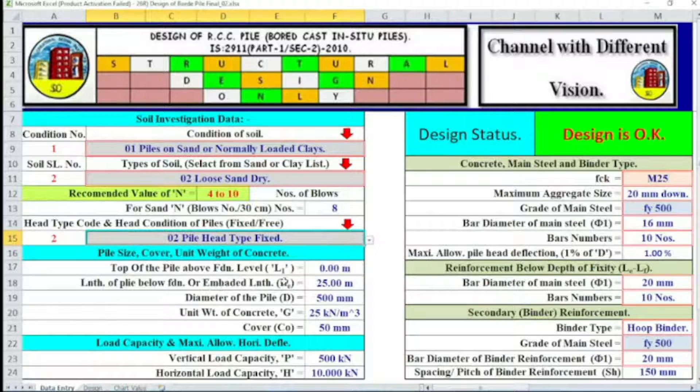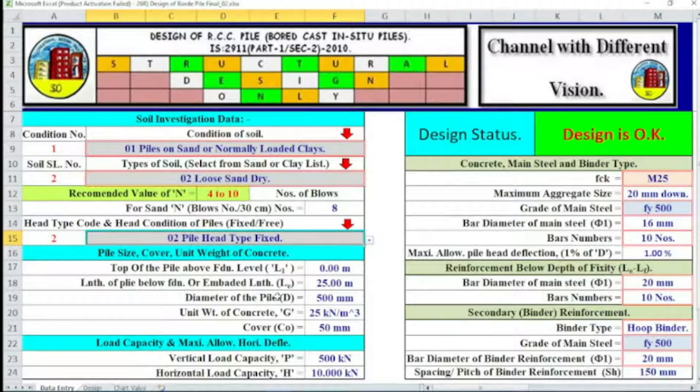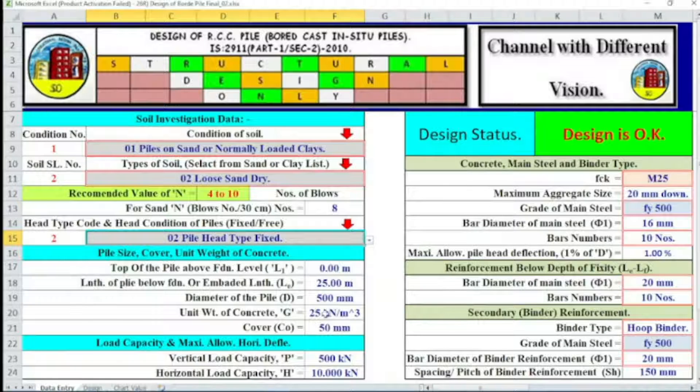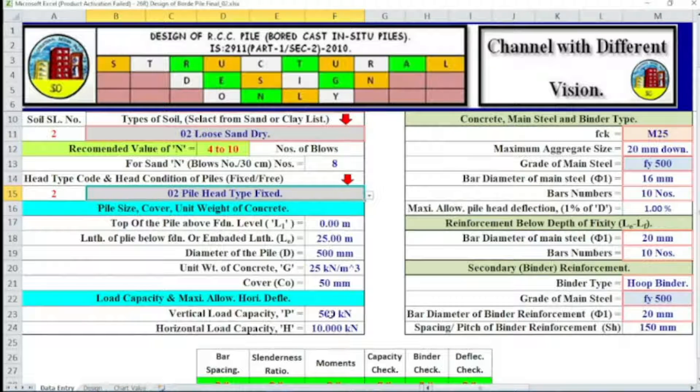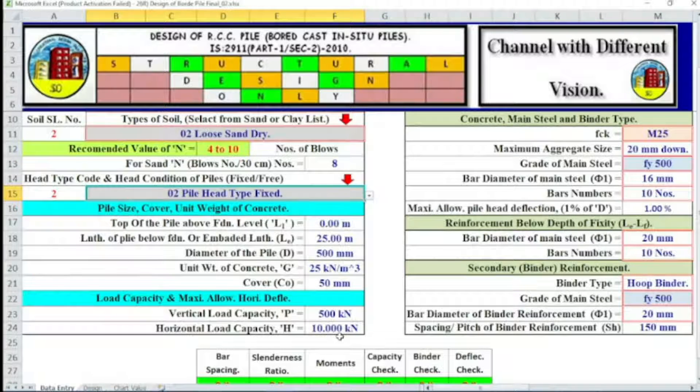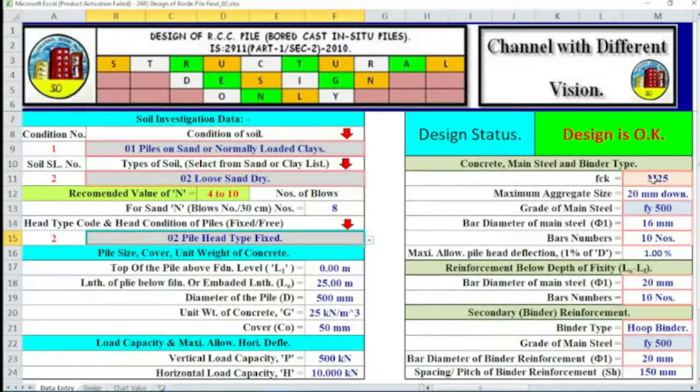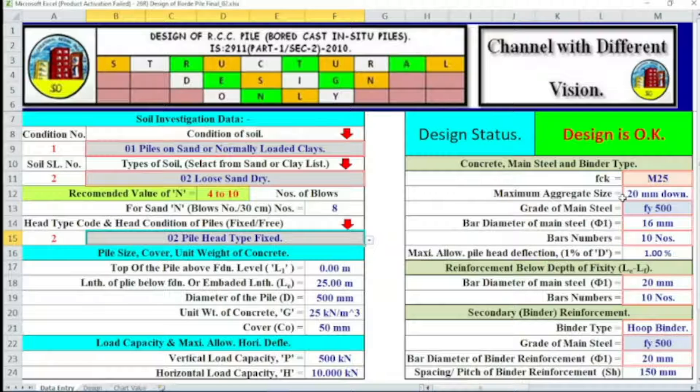Length of pile or embedded length is 25 meters. Diameter of pile 500 mm. Unit weight of concrete 25 kilonewtons per meter cube. Cover 50. Vertical load capacity 50 ton or 500 kilonewtons. Horizontal load capacity 10 kilonewtons or one ton. fck 25, minimum aggregate size 20 mm, grade of main steel fy equal to 500.